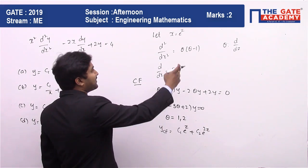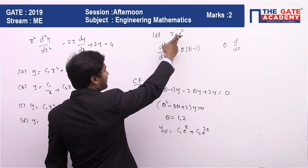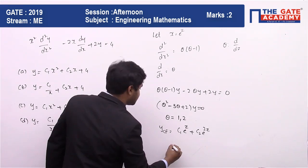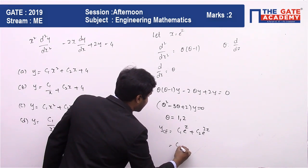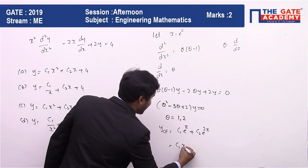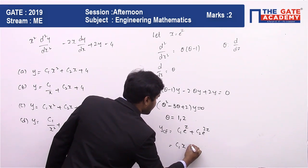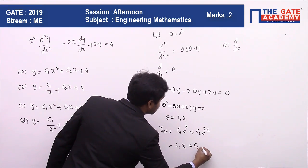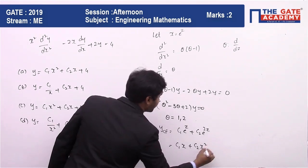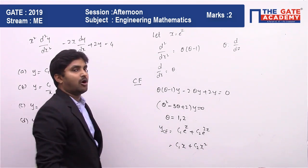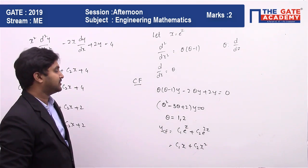Now, what is e^z? e^z is nothing but x. So we can write the complementary function as c1·x plus c2·x². This is the complementary part of the function.